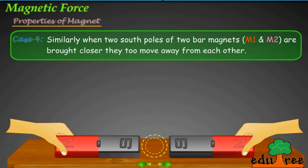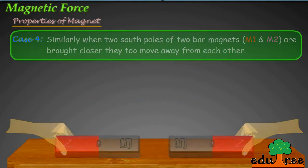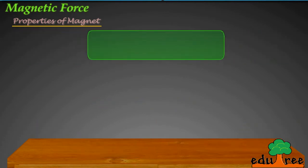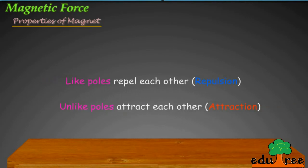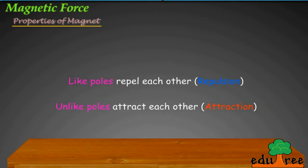When like poles are brought closer, they move away from each other — like poles repel each other, which is repulsion. Unlike poles attract each other, which is attraction.